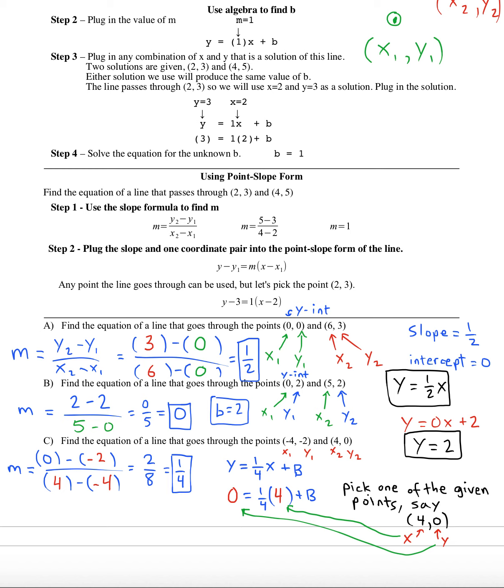Now you solve it. You get zero equals one plus b. Then you gotta solve by subtracting to reveal that b is negative one.